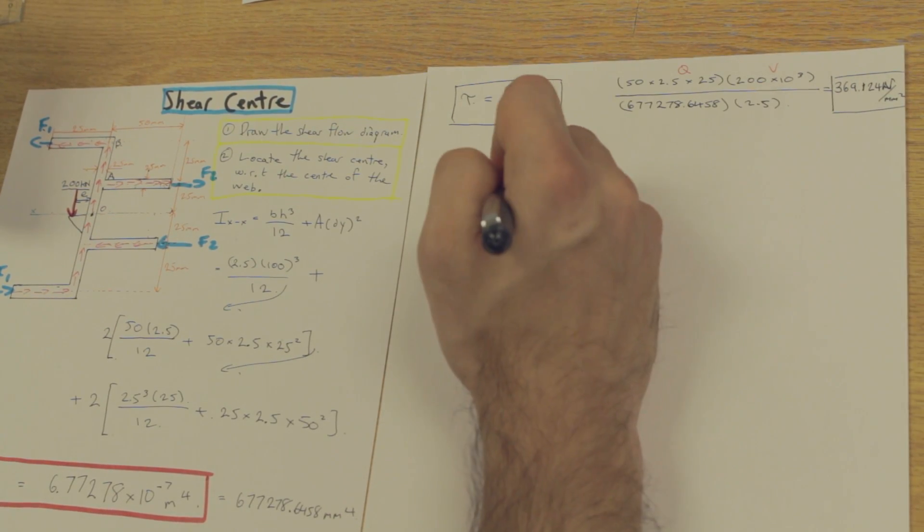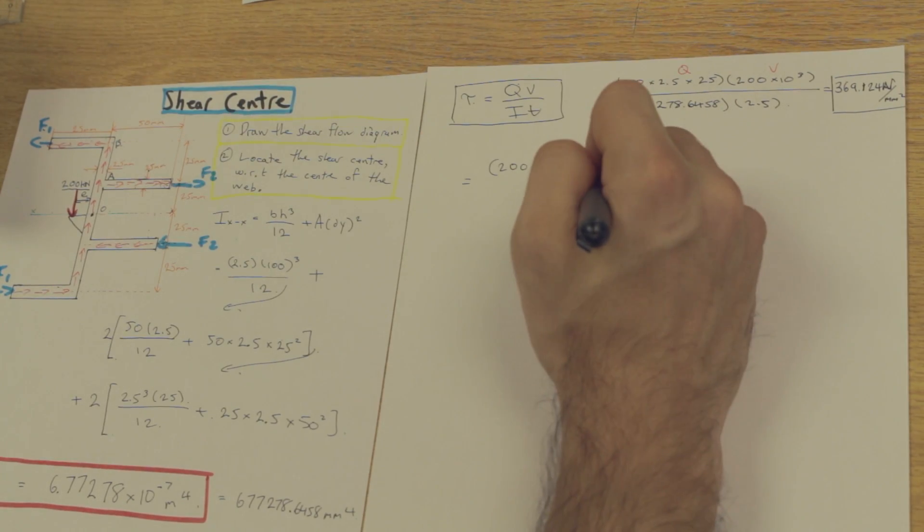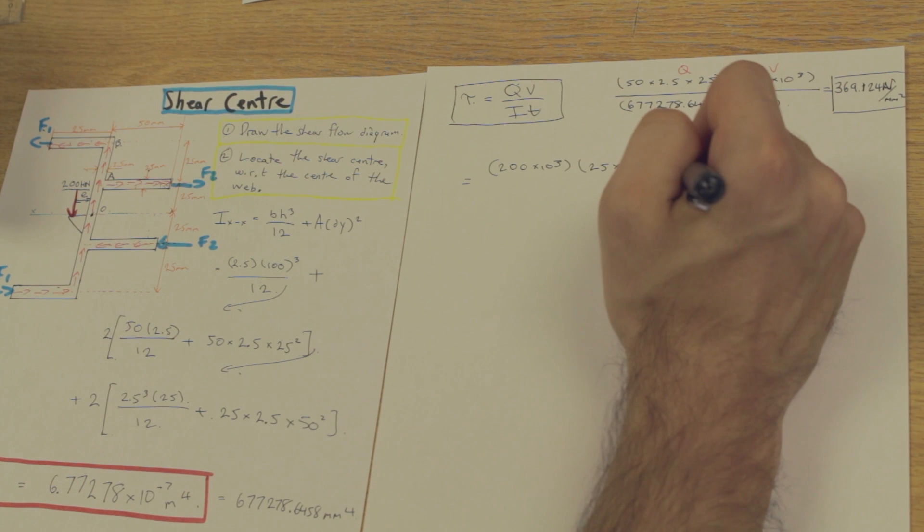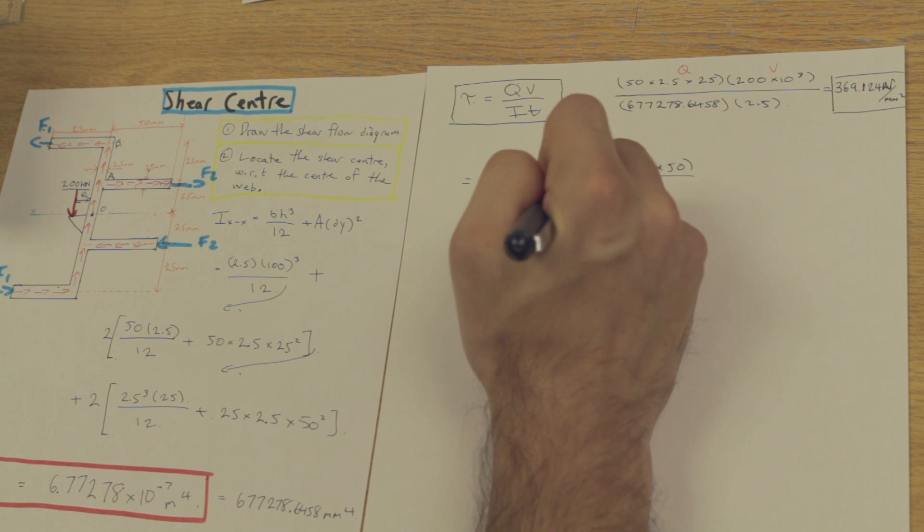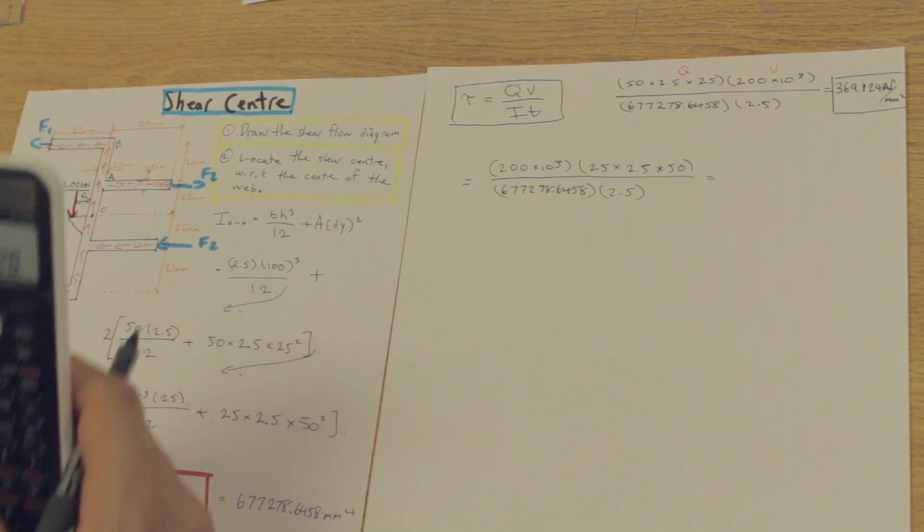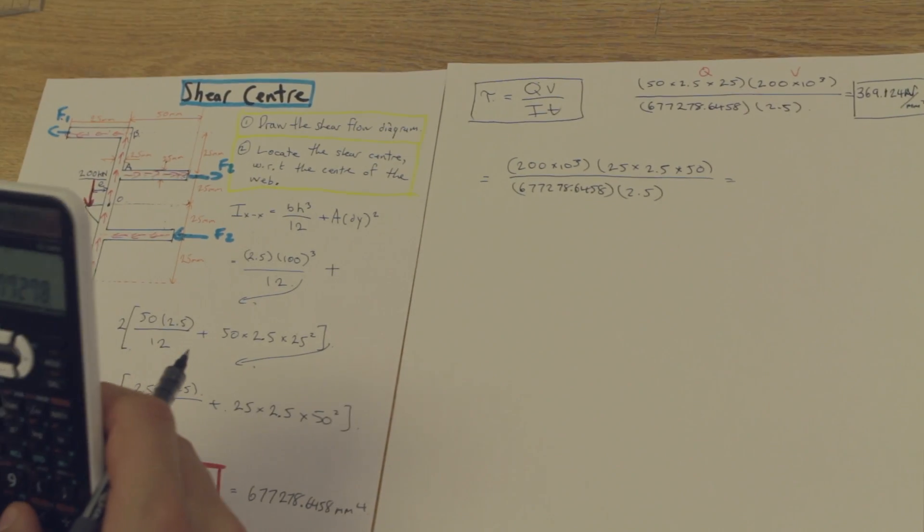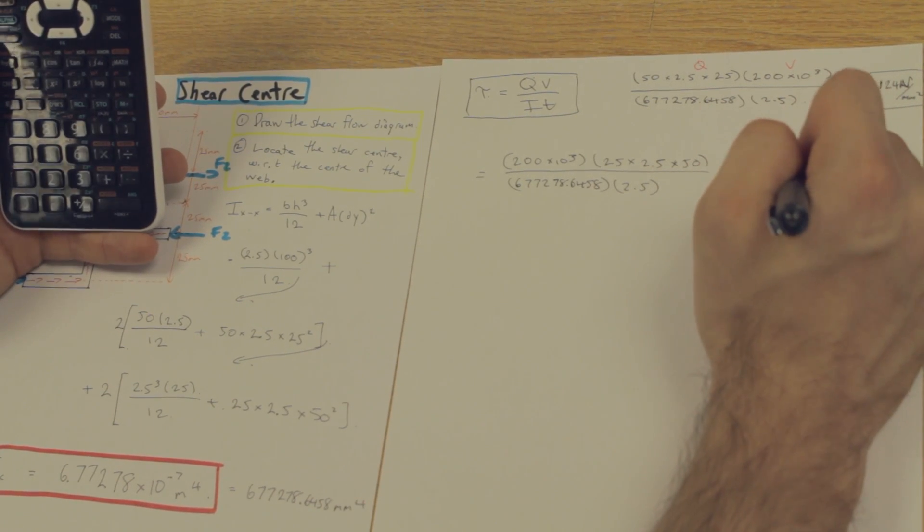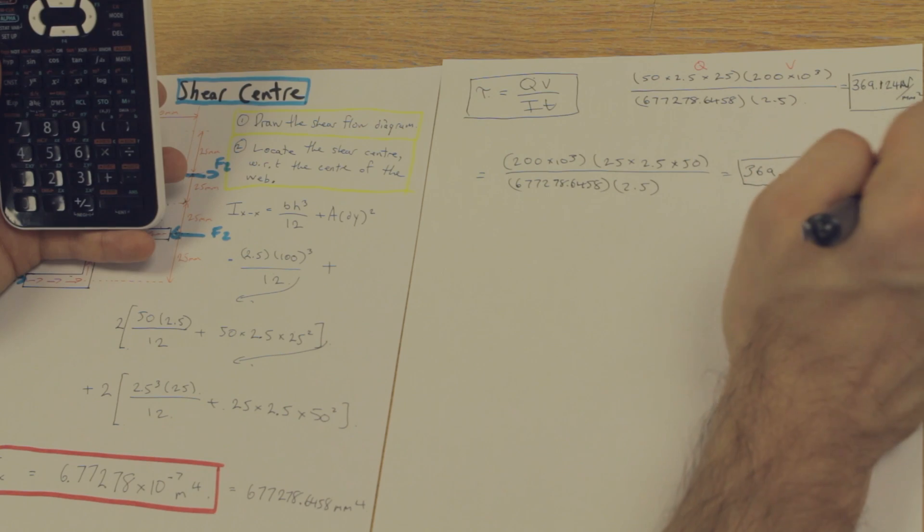Now, we have the same shear. It's the same throughout. That's a constant. We have the area of 25 times 2.5, and then our dy, or our distance to the centroid, is 50 millimeters. Same moment of inertia, and same thickness. Now, when we put that in, we're going to get exactly the same thing.